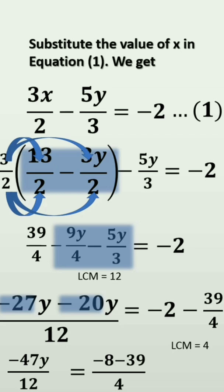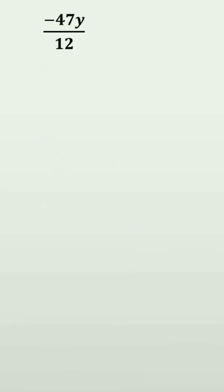So, after simplification, RHS becomes minus 47 by 4. So, minus 47y by 12 is equal to minus 47 by 4.